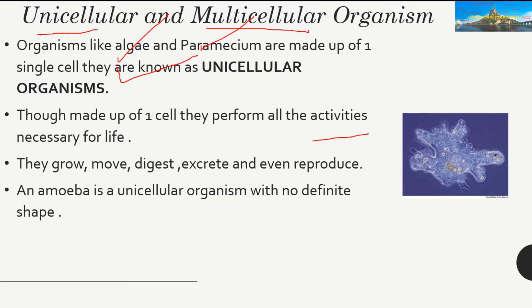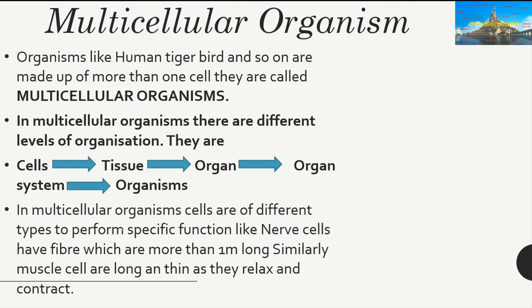Unicellular organisms are made of just one cell but perform all activities necessary for life — they grow, move, digest, excrete, and even reproduce. An example is amoeba, which is a unicellular organism with no definite shape.